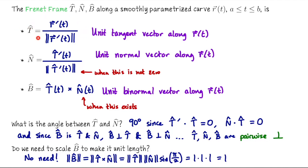We've seen T-hat, the unit tangent vector, before. Given a smoothly parametrized curve R, you find T-hat by computing the velocity vector and dividing it by the speed. That gives you T-hat of t, which is a vector-valued function in its own right. We can compute its derivative T-hat prime, and whenever that is not the zero vector we take that vector and divide it by its own magnitude to create the unit normal vector.